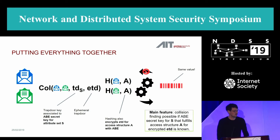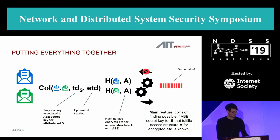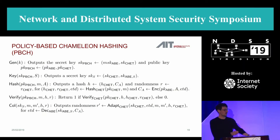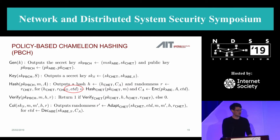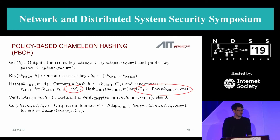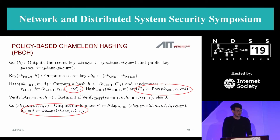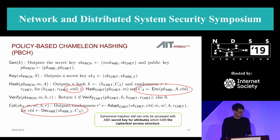The main feature is that collision finding is possible if the ABE secret key for attribute set S fulfills the access structure A for an encrypted ETD. On the technical side, we have five algorithms. The hash algorithm of CHAT outputs the ETD, and then hashing uses this ephemeral trapdoor to encrypt it under the ABE public key and access structure A. The collision-finding algorithm decrypts using the right secret key for attributes fulfilling the access structure, recovers the ETD, and can then find collisions.